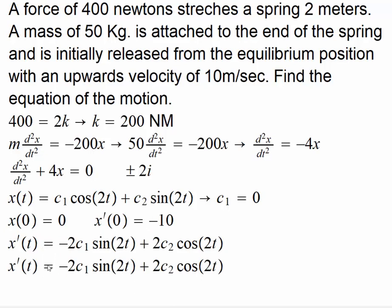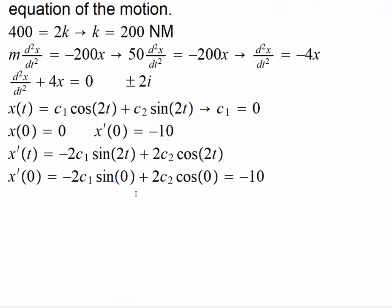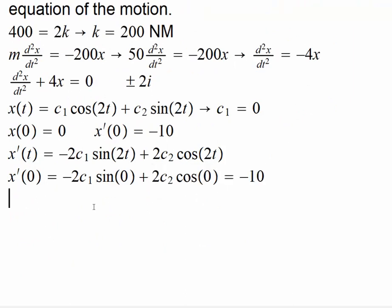And then we have that this quantity at 0 is sine of 0, and that becomes equal to negative 10. Sine 0 is 0, so we simply get 2c₂ cosine 0 equals negative 10.